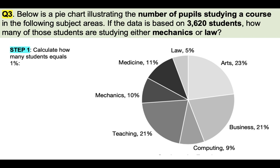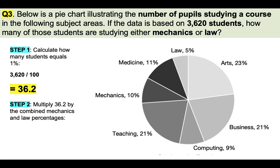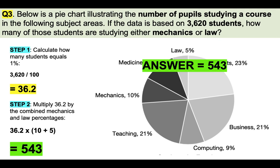We follow some simple steps. Step 1: calculate how many students equals 1%. If 3,620 is 100%, we divide by 100 to get 36.2 — that's 1%. Then all we need to do is multiply that 1% by the combined mechanics and law percentages, which is 15. So 36.2 multiplied by 15 gives us 543 as the correct answer. Very simple when you follow those two steps.